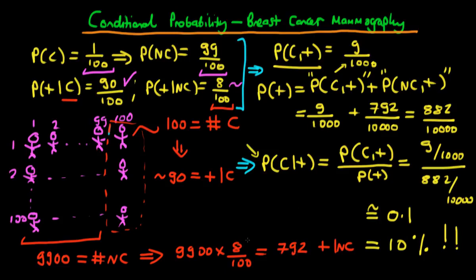Now we kind of see the intuition because there are loads of people who actually test positive because we're dealing with quite a big group, but only quite a small fraction of them are the ones that actually do have cancer. So only this 90 out of a total of 90 plus 792, which is 882, which gives us roughly a figure of 10%.